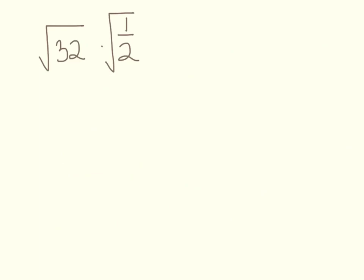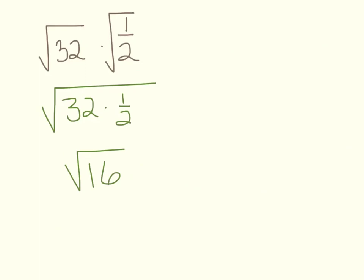Here we have the square root of 32 times the square root of 1/2. Rather than simplifying each separately and rationalizing, use the property to combine them: the square root of 32 times 1/2. And 32 times 1/2 is 16, which is a perfect square, so the answer is 4.